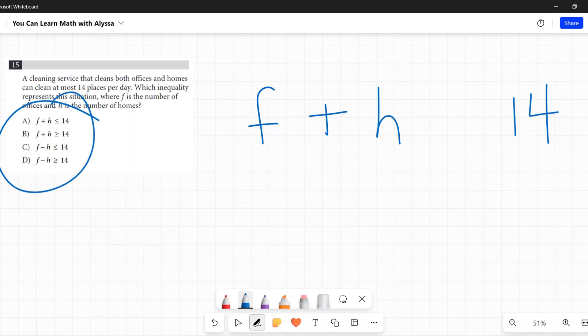And let's look at our options here. We have F plus H, F plus H, F minus H, F minus H. And right off the bat, F minus H options are out of the question because we're saying together, we're adding, we're bringing them together.